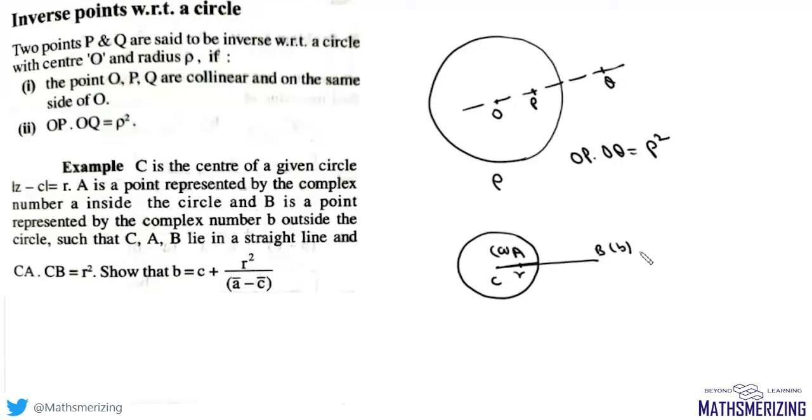It says CA times CB equals r squared. That means A and B are inverse points with respect to each other. Now we need to show that b = c + r²/(ā - c̄).